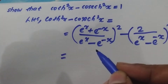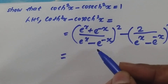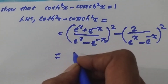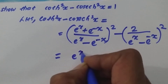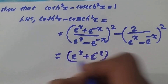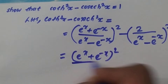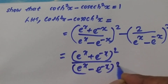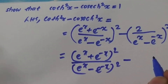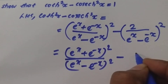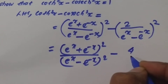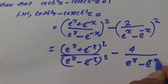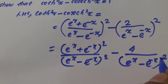Since (a/b)² = a²/b², we apply this — separating numerator and denominator squares. So we get (e^x + e^(-x))² over (e^x - e^(-x))², minus 2² which is 4 over (e^x - e^(-x))².